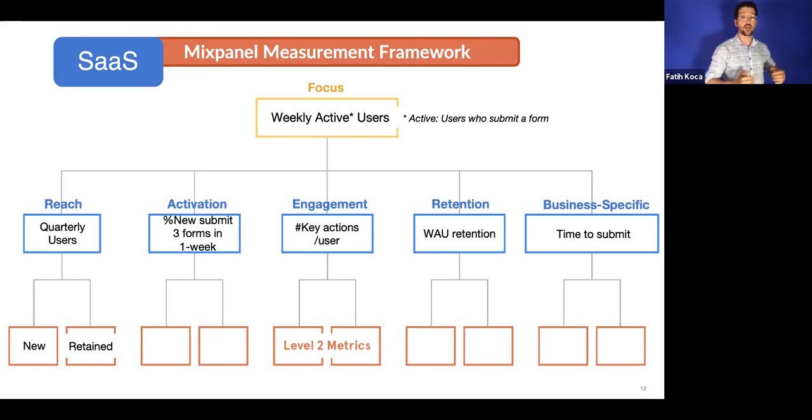So quarterly users is our user base, our user base that we can activate every week, every month, every day. It is our ceiling for the weekly active user metric. And we should ideally have two components in a healthy way: one acquisition, new users; and retained users, existing user base, users who have been with us for years, for quarters, for months.